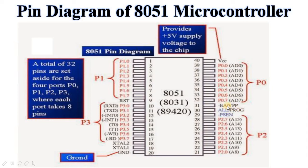Then pin number 31, that is EA bar (external access). This is an active low signal. When EA pin is high, connected to VCC, the program fetches from address 0000 directed to the internal ROM memory. When EA pin is low, connected to ground, the program fetches from addresses 1000H through FFFFH directed to external ROM or EPROM memory. Then pin number 32 to 39, that is port 0.0 to port 0.7.